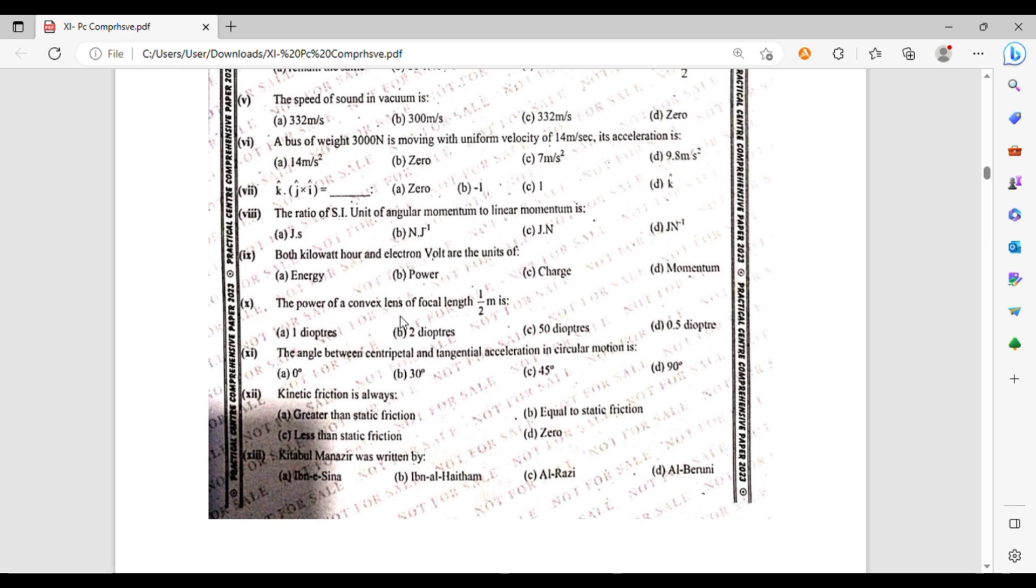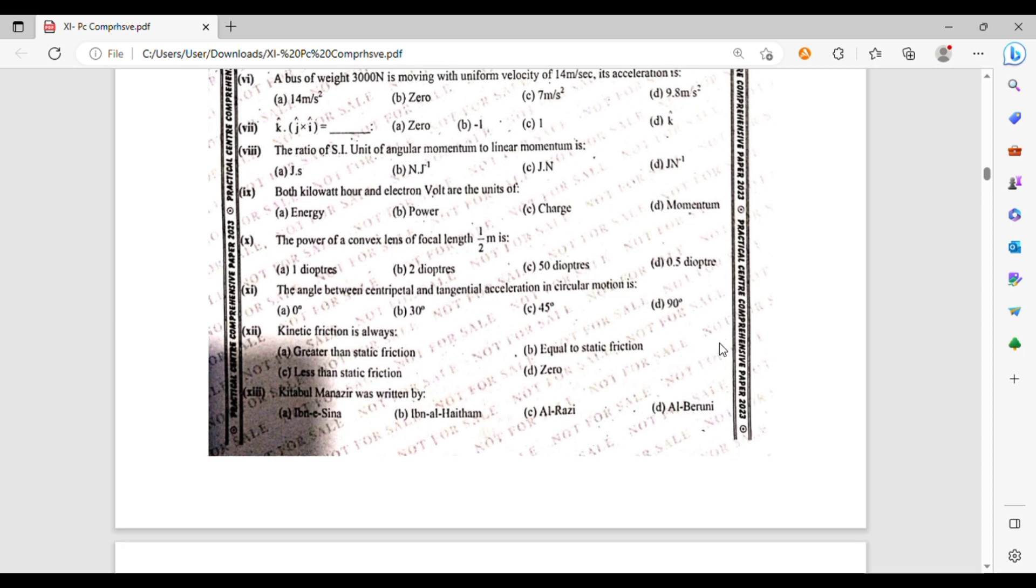The power of a convex lens of focal length 1 upon 2 meter is 1 diopter, 2 diopter, 50 diopter, or 0.5 diopter. The angle between centripetal and tangential acceleration in circular motion is 0 degree, 30 degree, 45 degree, or 90 degree. Kinetic friction is always greater than static friction, lesser than static friction, or equal to static friction.